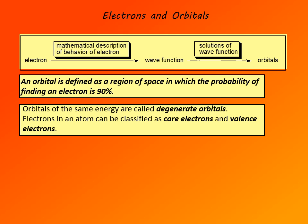Electrons in an atom can be classified as core electrons and valence electrons. And it's only valence electrons that participate in bonding. So it's valence electrons, those in the outermost shell, that are responsible for chemical and physical properties of an element.